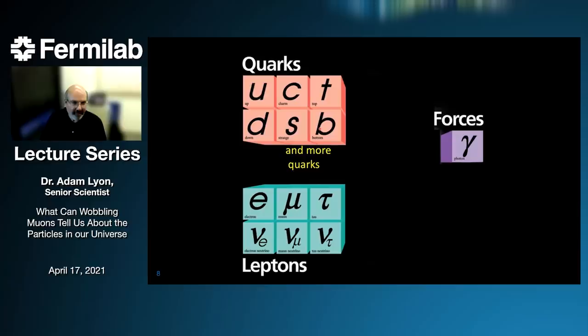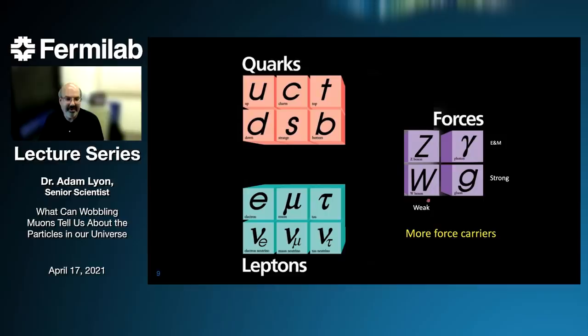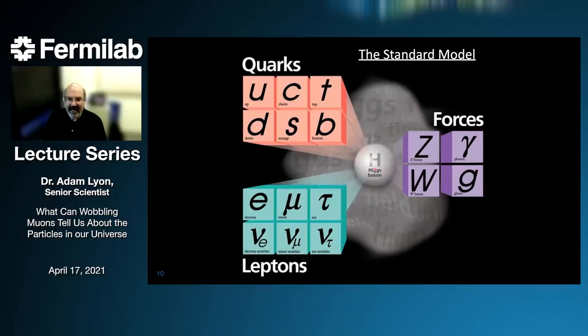We're building a big neutrino experiment in a mine in South Dakota called DUNE. We'll concentrate on muons, though neutrinos are very interesting. Along with the additional leptons, we've discovered additional quarks. I was at the D0 experiment when the top quark was discovered in 1995 — another very exciting time. You see these three families, three columns of fundamental particles. To round out the force-carrying particles, we have the photon, the gluon, the weak force particles — the heavy W and Z bosons — and then one more particle long predicted and finally discovered at experiments on the Large Hadron Collider at CERN: the Higgs boson, which made all the news in 2012.